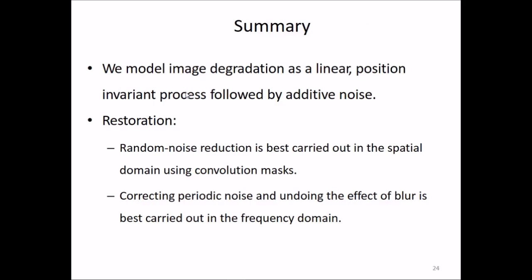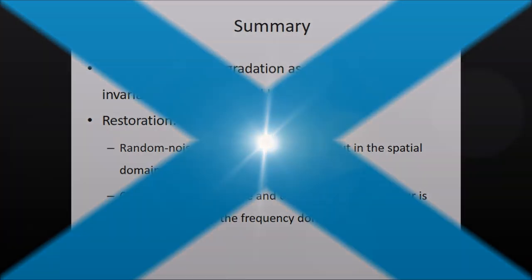In summary: we model image degradation as a linear position-invariant process followed by additive noise. Restoration for random noise reduction is best carried out in the spatial domain using combination masks, and correcting periodic noise and undoing the effect of blur is best carried out in the frequency domain.